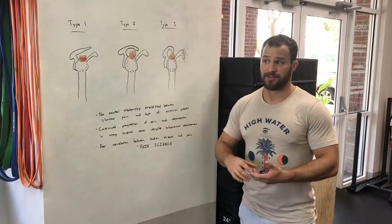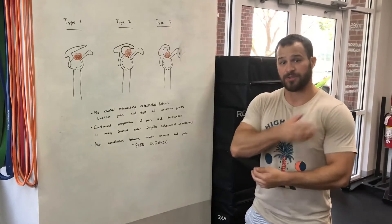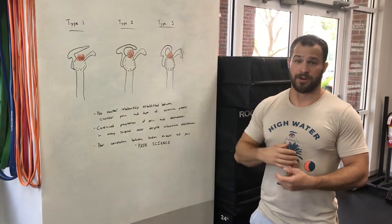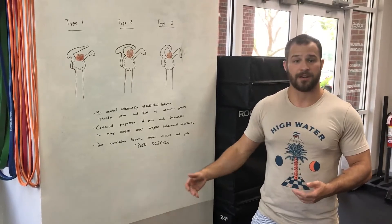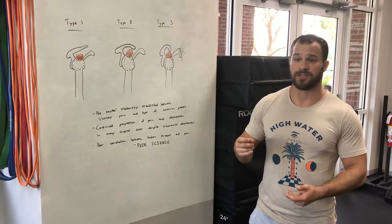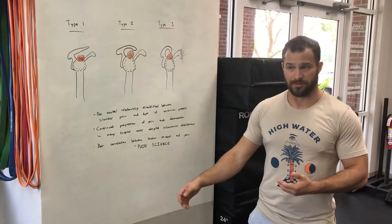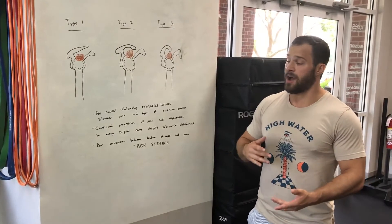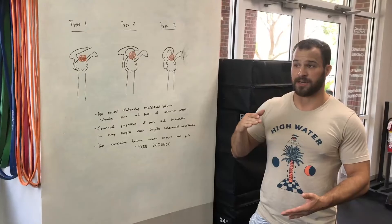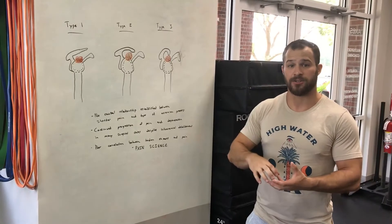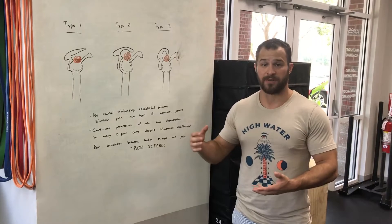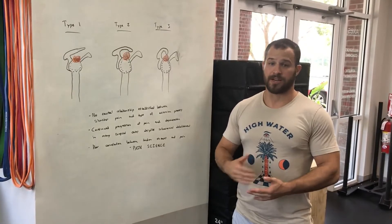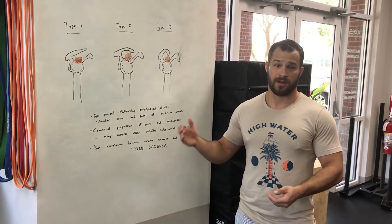There are a lot of subacromial debridements performed, where a surgeon goes in and cuts off bone spurs or reshapes the acromion process to look more like a type 1. Despite that, there's a lot of continued pain and progression of tendinopathy symptoms in people who get these surgeries. Just changing the mechanics doesn't necessarily fix it, which points more to the problem not being related to the type of acromion process.